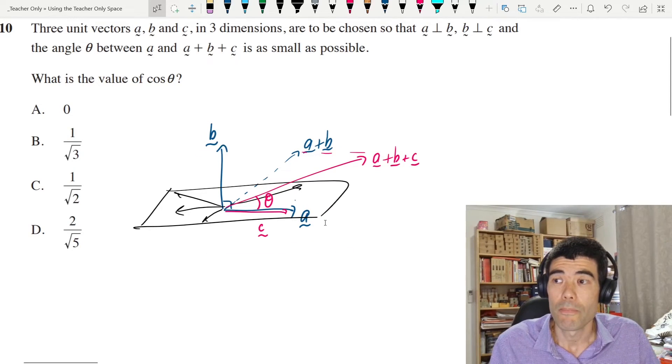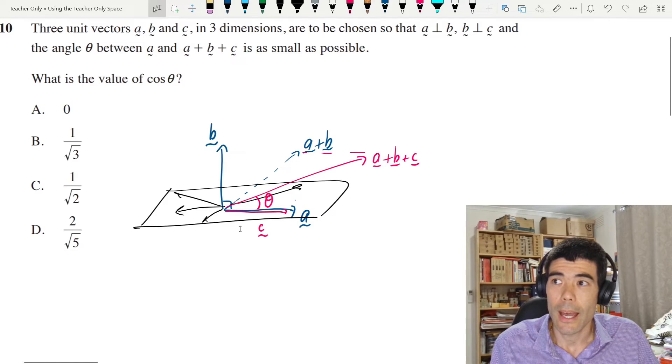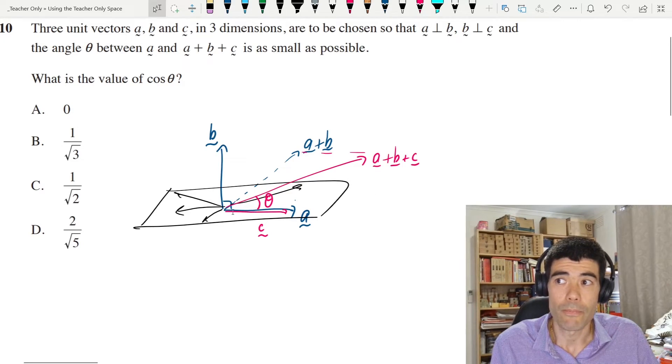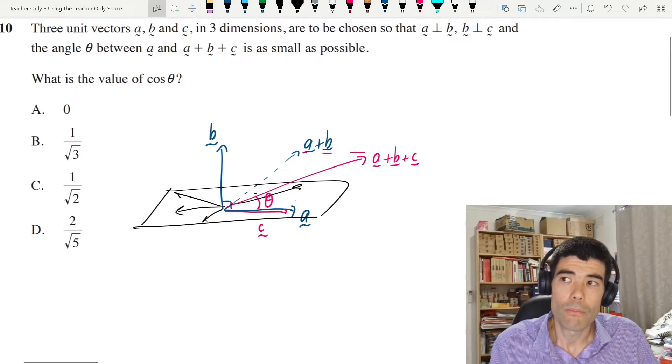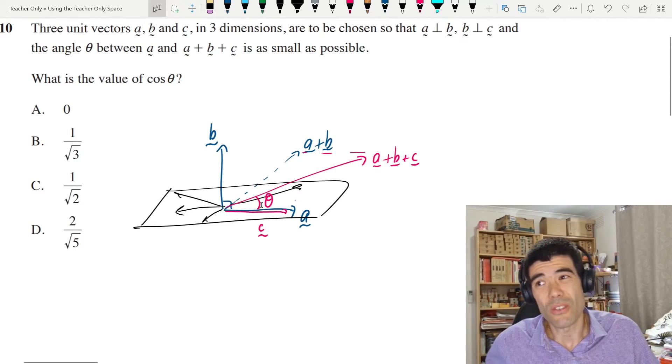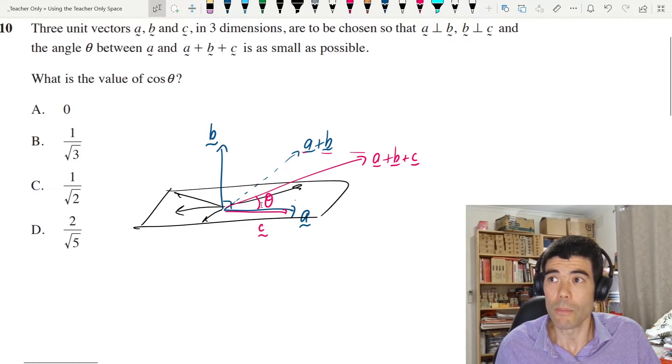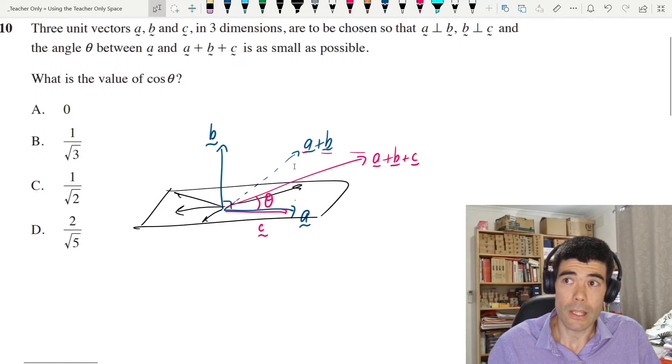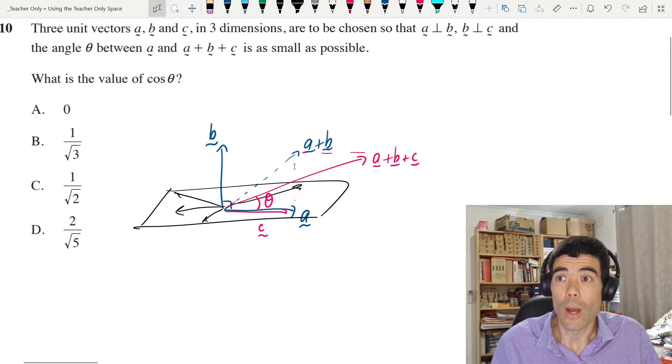If we do that, then a plus b plus c is going to be something like this and that would minimize this angle. If we were to choose c in the opposite direction or something or in a different direction, then this vector a plus b plus c is going to be further away from a.